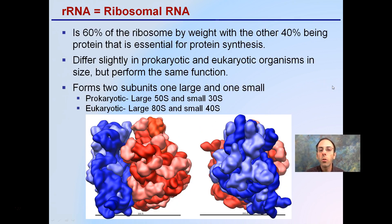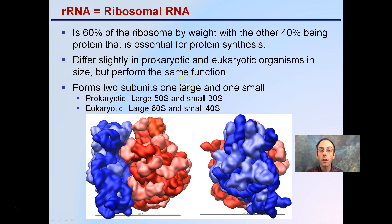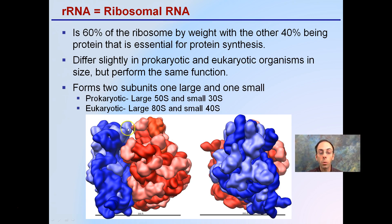Continuing with ribosomal RNA: 60% of the ribosome by weight is rRNA, and the other 40% is proteins. That sounds a little weird that it takes proteins to make proteins, but in this case it's true. There are slight differences between prokaryotic — bacteria — and eukaryotic — plants and animal cells — in size, but they perform the same function. The large subunit and small subunit in prokaryotic cells are called 50S and 30S. In eukaryotic cells, the large is 80S and the small is 40S. The key part is understanding that a larger unit and smaller unit bind together, with a small gap where the mRNA single strand will work its way through during protein synthesis.